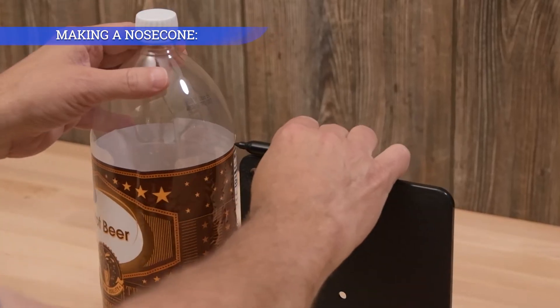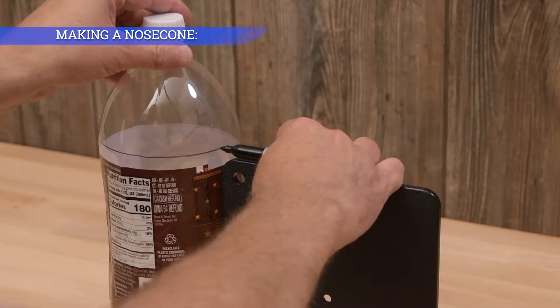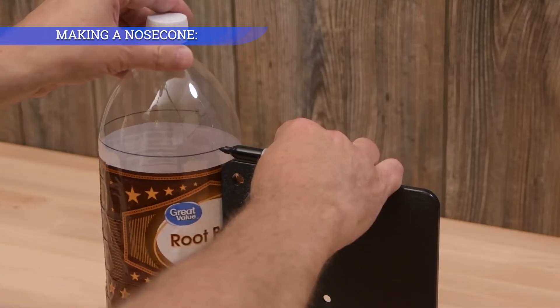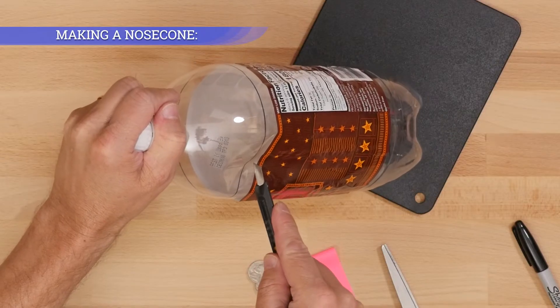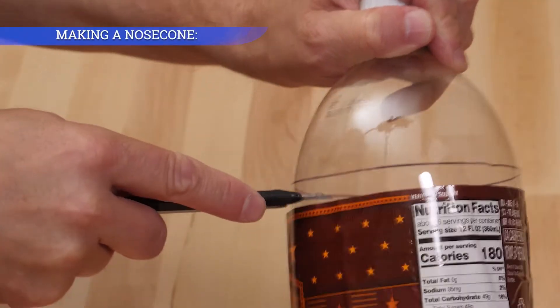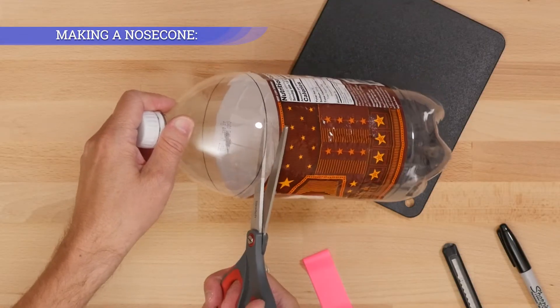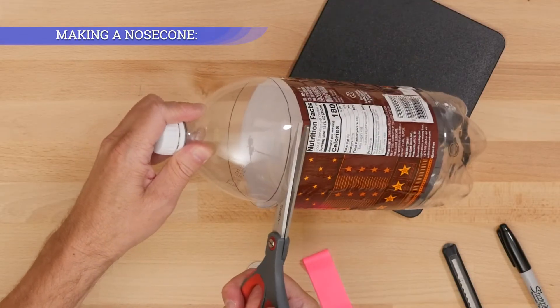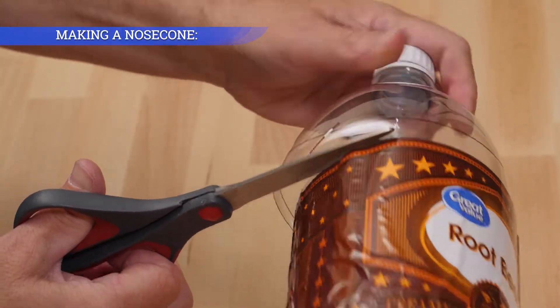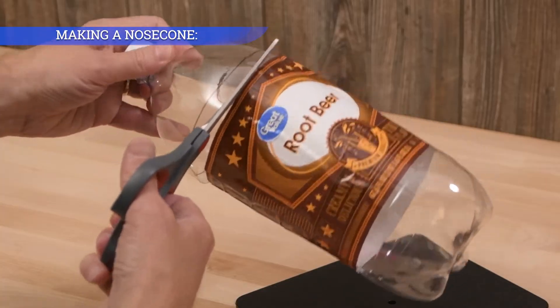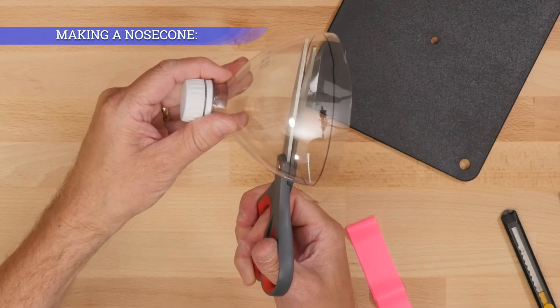Draw a line around the bottle using the base as a guide. Puncture the bottle below the line with a knife or box cutter. Rough cut the lower portion of the bottle away. Cut precisely along the drawn line.